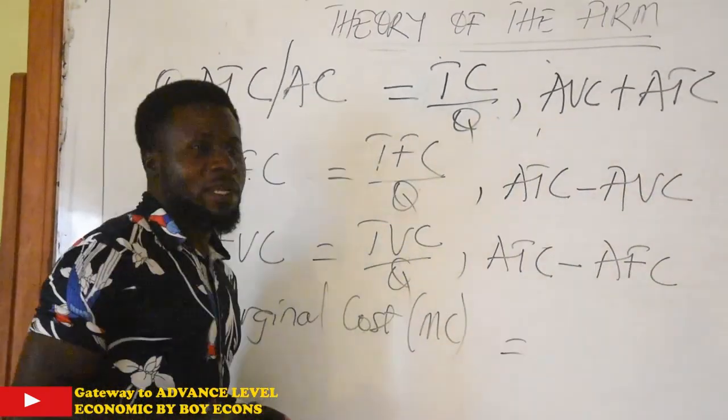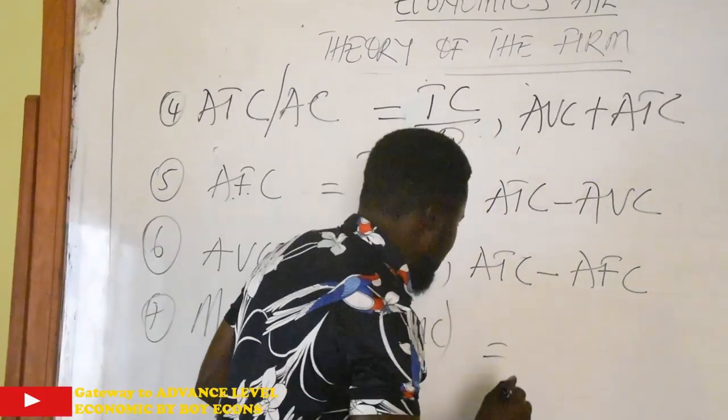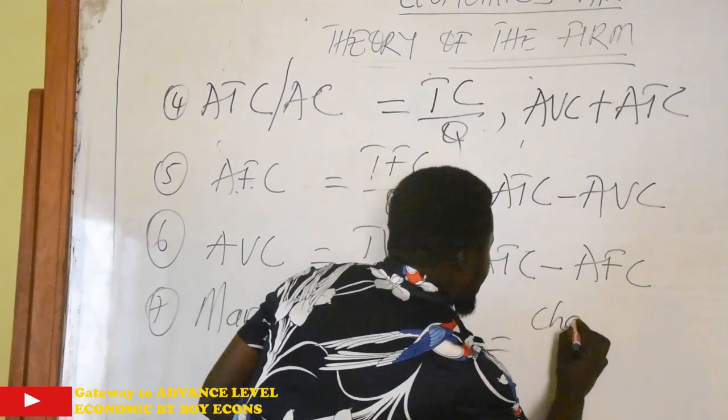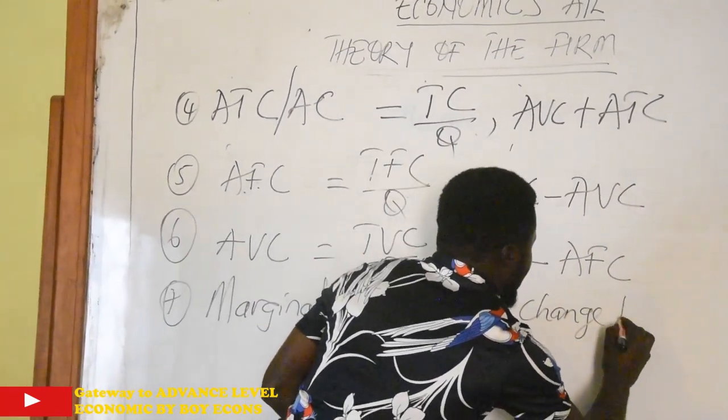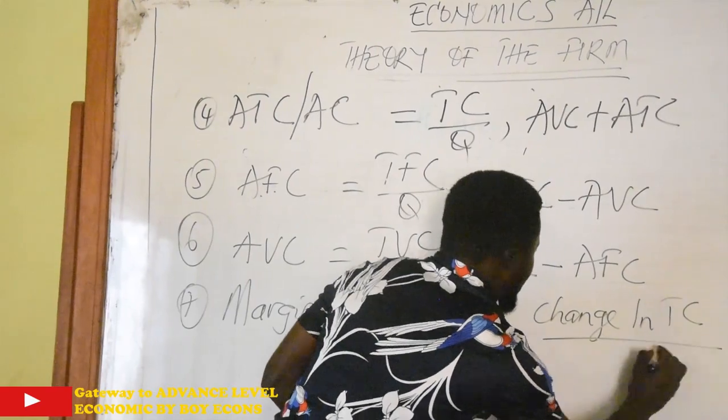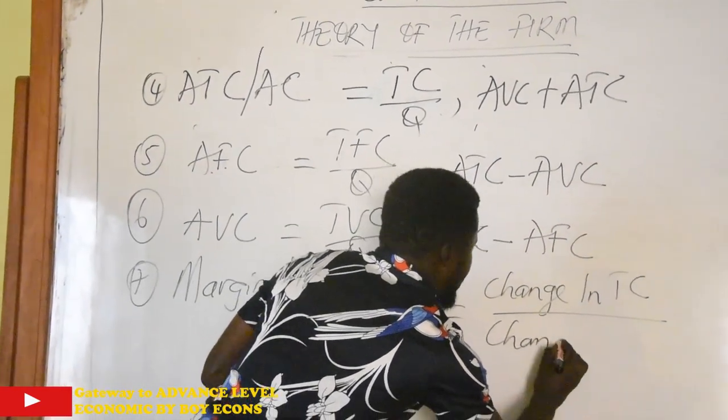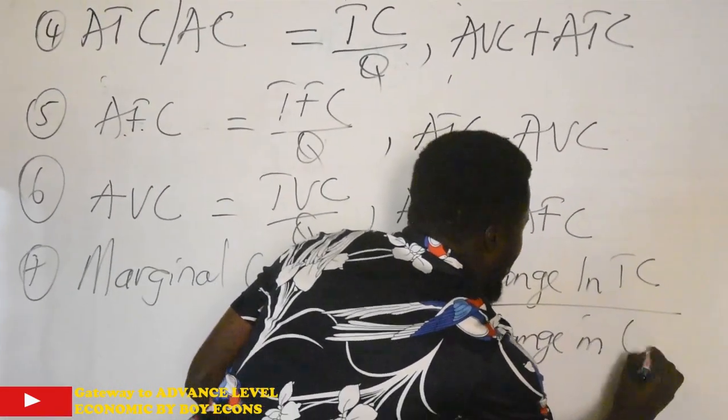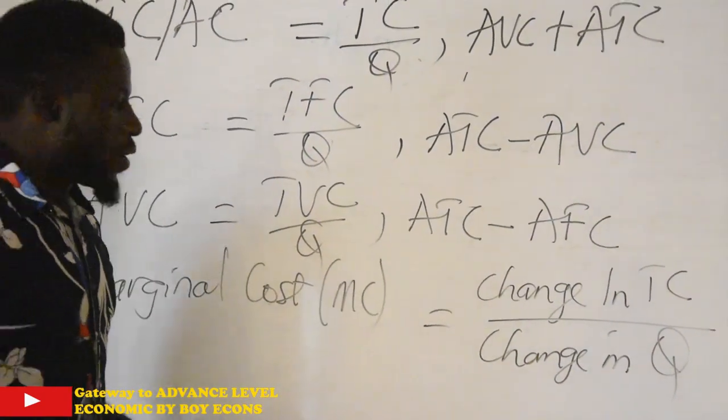So it is calculated in two ways. We have change in total cost over change in output. You calculate it that way.